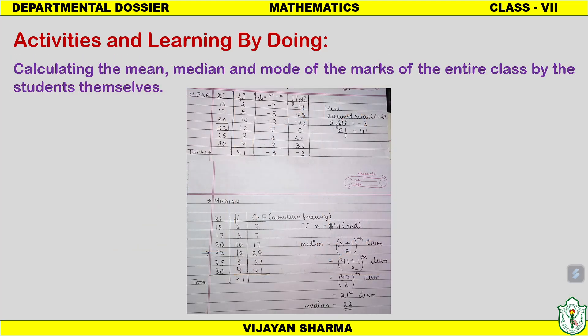The third activity is calculating the mean, median, and mode of the class marks by the students themselves. After the maths unit test answer sheets were shown, I asked students to calculate the mean, median, and mode of the marks secured by the class in maths. I wrote all the marks data on the whiteboard and they calculated using formulas and tabulation.